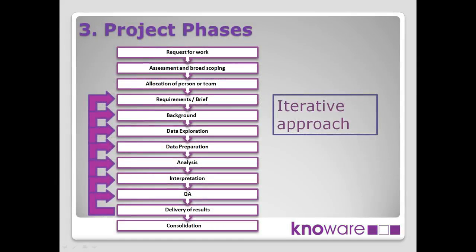This slide shows typical project phases for a piece of work, depending on what the work is and what the organisation is. This one is based on research and evaluation analysts' work, but it could be BI developers developing reports or user interfaces. The first phase is when the request for work comes in, then someone assesses that work, and it gets allocated to the resources doing the work. Then we look at the requirements or brief, followed by getting background information, data exploration — looking for outliers and getting a good feel for the data — before moving on to data preparation.